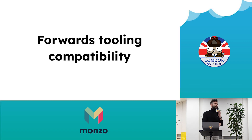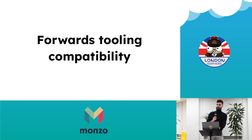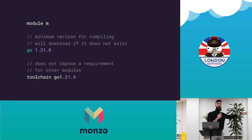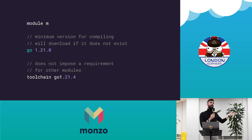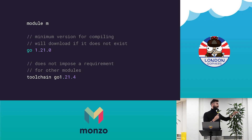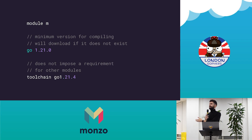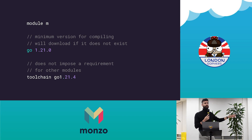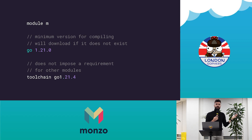The other one is forwards tooling compatibility, which is an interesting title. Mainly, you can now declare the Go version in your go.mod. Previously it might try to compile and if it compiled, it was kind of best effort. But with Go 1.21, it will download the toolchain — it's a minimum version, and if you don't have it, it will download it from GoMods. You can specify a specific version for your toolchain if you want. For me, the backwards compatibility one is the most interesting.